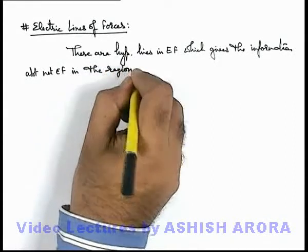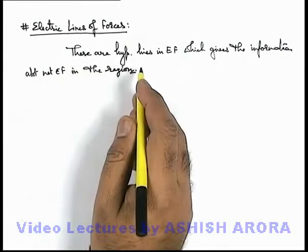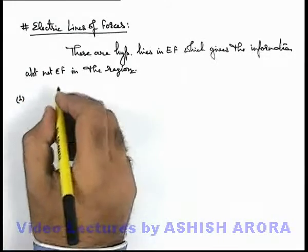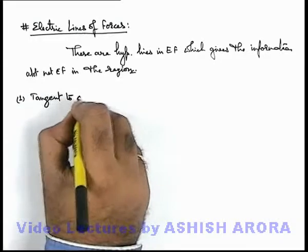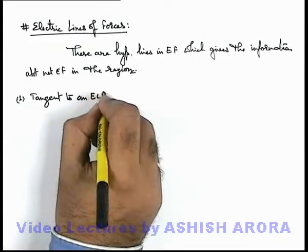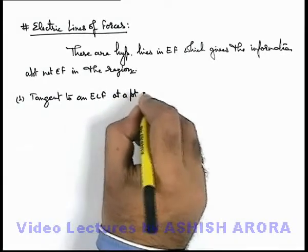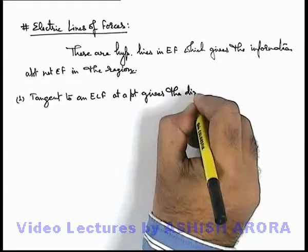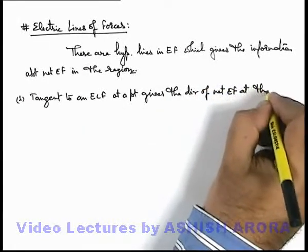Using the electric line of force configuration, we can get the whole idea about the net electric field in the region. The very first point is about the direction of electric field. We can say that the tangent to an electric line of force in the electric field at a point gives the direction of net electric field at that point.